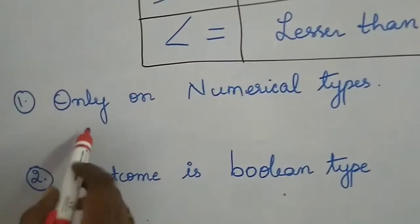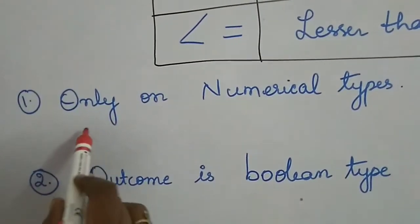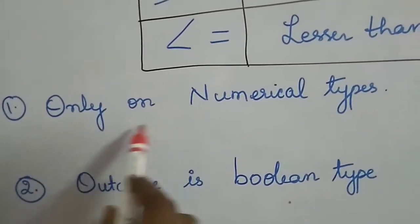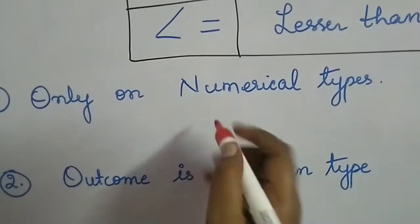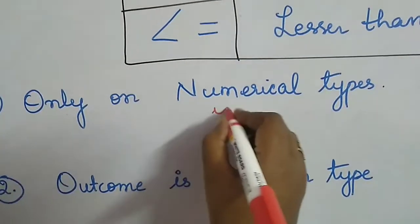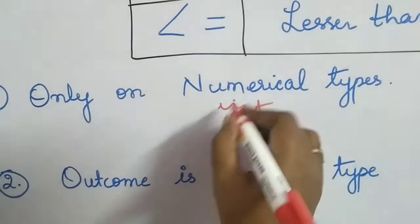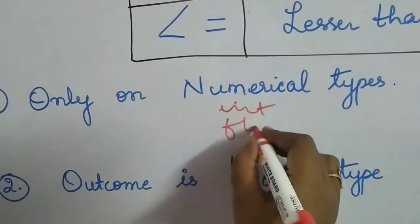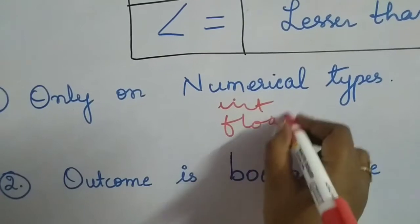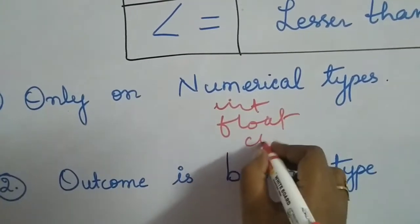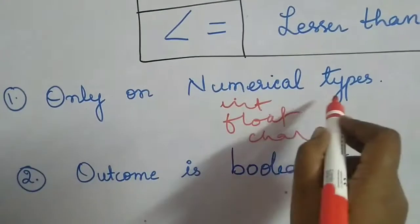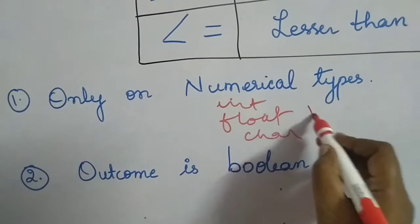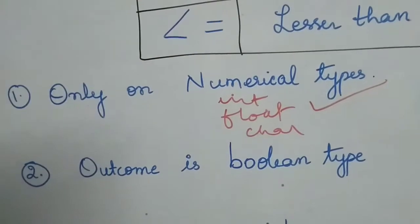The first rule is that relational operators can be applied only on numerical types. What are the numerical types? Those are int types, float types, and char. So these operators can be applied only on numerical types.